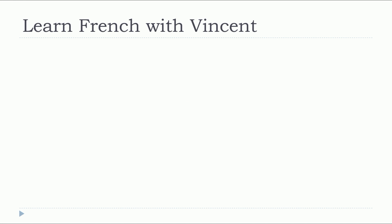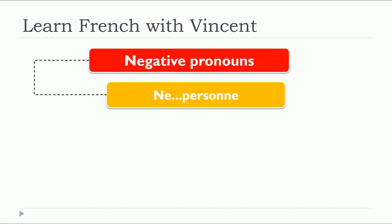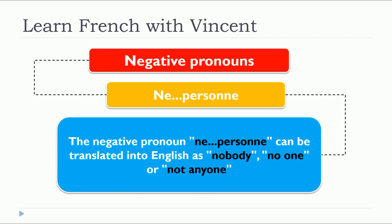This lesson is about NE PERSONNE. The negative pronoun NE PERSONNE can be translated into English as NOBODY, NO ONE, or NOT ANYONE.